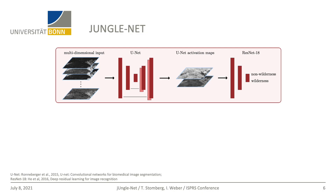Here is our interpretable deep neural network, which we call GinoNet. It consists of two well-known convolutional neural networks. The first one is a UNet and the second one is a ResNet-18. A UNet consists of an encoder-decoder structure and is mostly used for segmentation tasks, since the output map has the same height and width as the input image. A ResNet is a residual neural network often used for image classification. For implementation in GinoNet, we adjusted the UNet so that it takes multidimensional images and outputs two activation maps, which are then passed to the ResNet, which classifies into IUCN-wilderness and non-IUCN-wilderness.